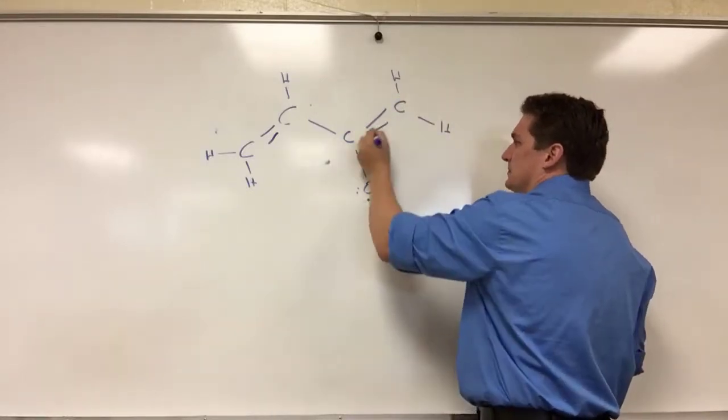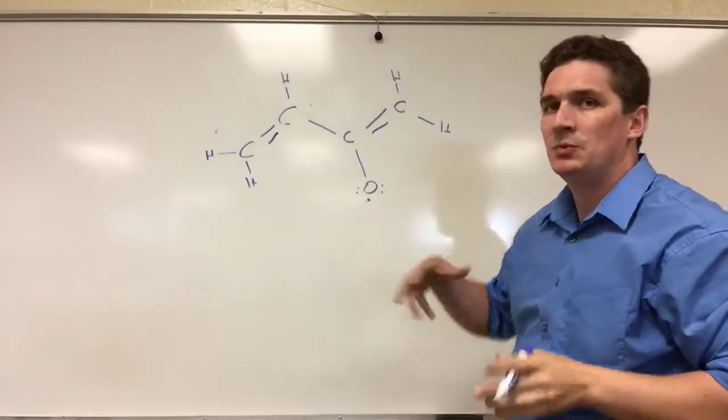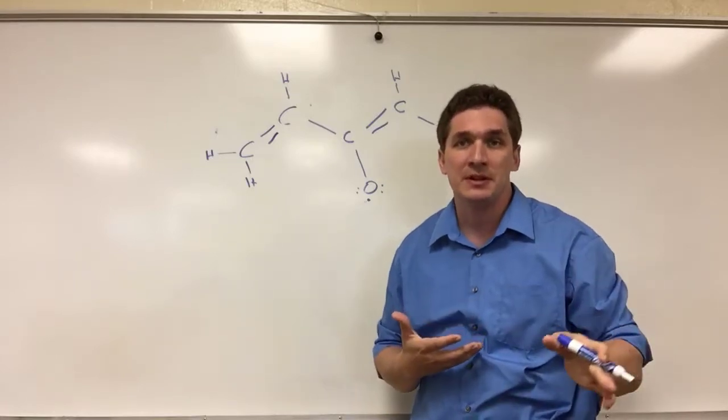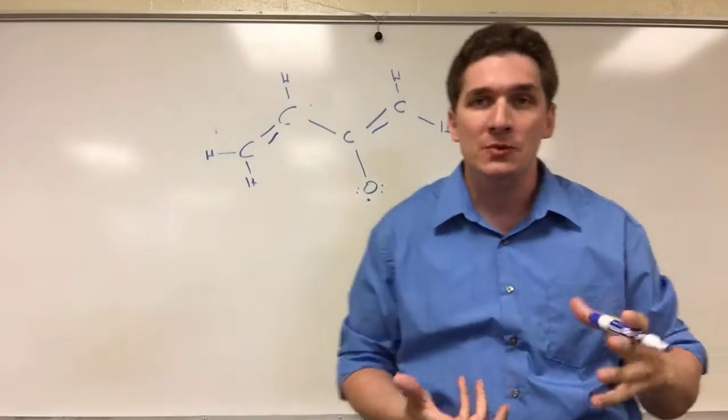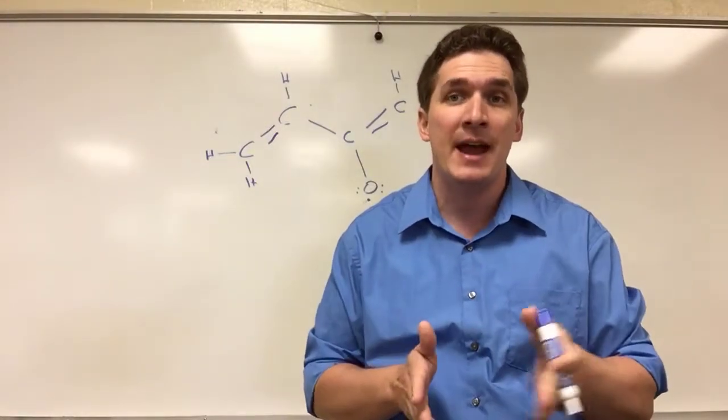So what about this radical? Well, we've got an option here. We have one electron, and the rule with resonance structure is we can't create or destroy the numbers of unpaired electrons, but we can definitely move them around. Now typically what we're going to do to move around unpaired electrons is we're going to split a double bond in half.